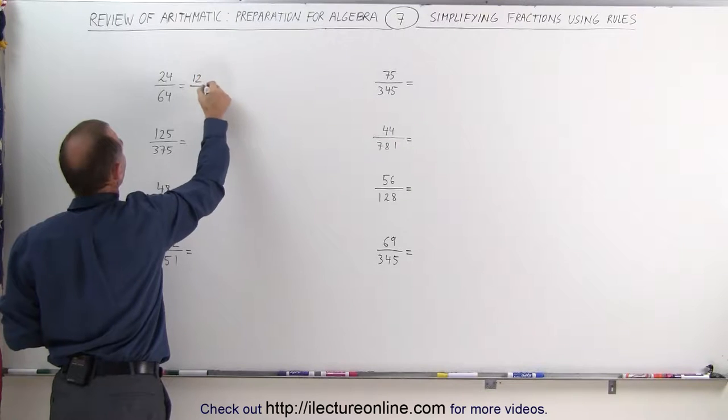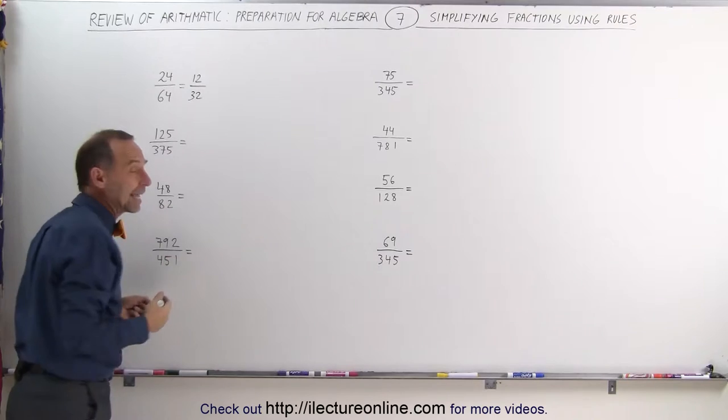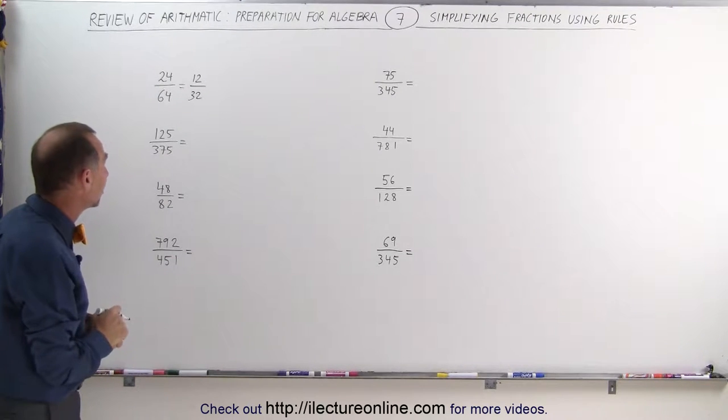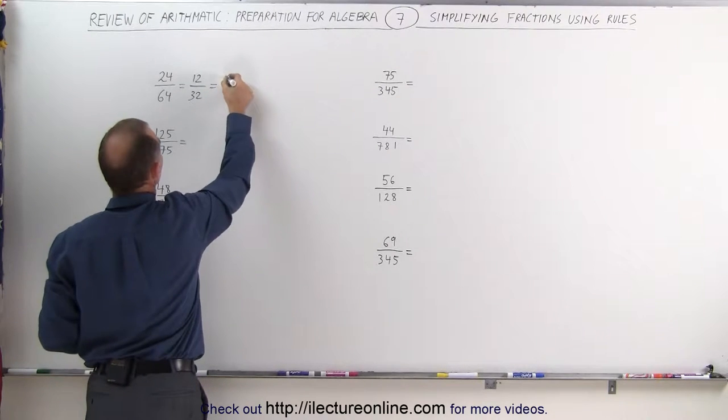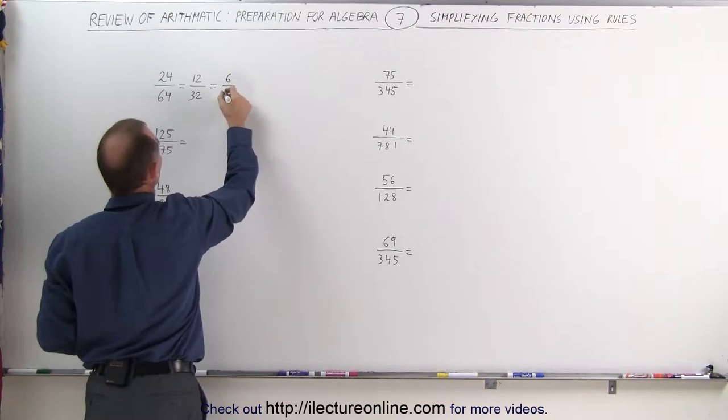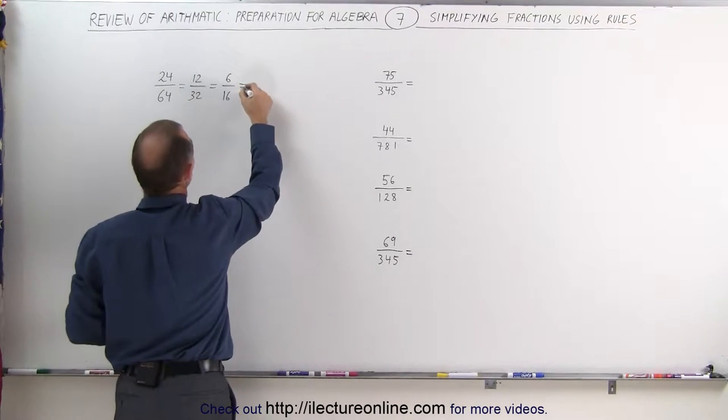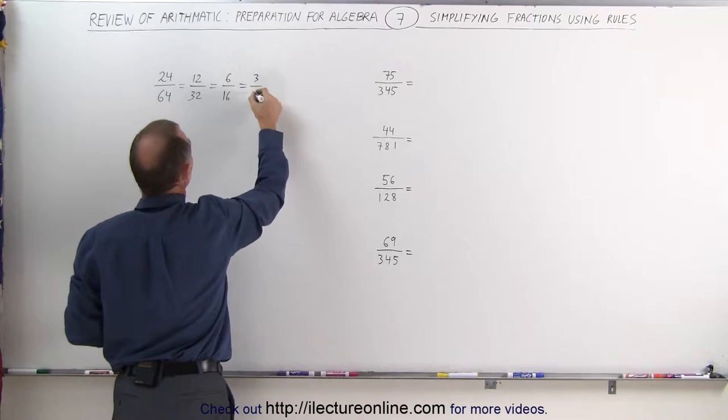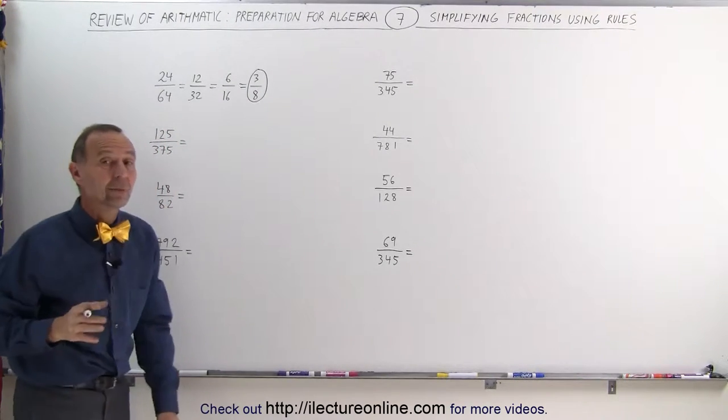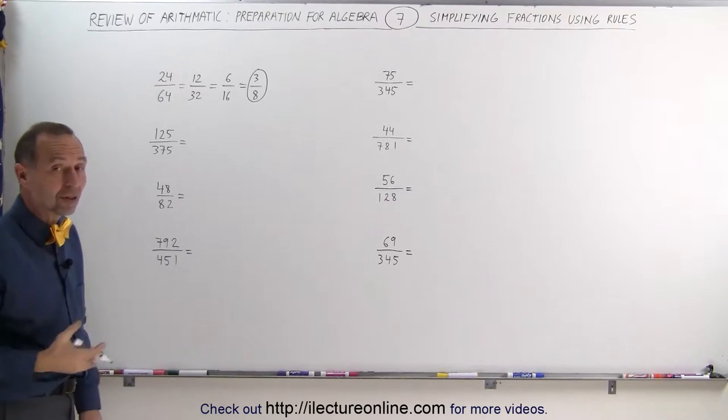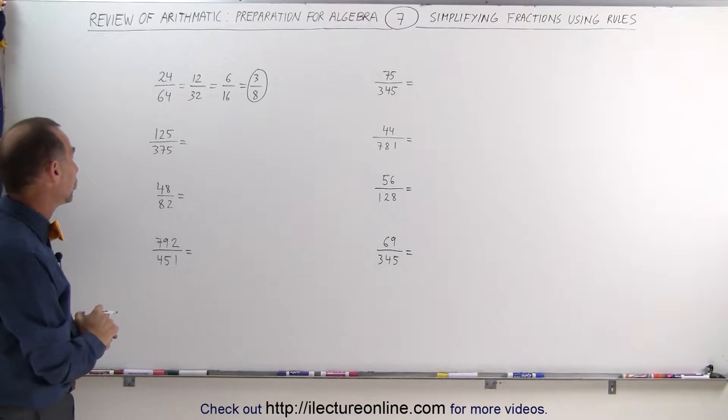24 divided by 2 is equal to 12, and 64 divided by 2 is equal to 32. All I have to do is just take half of each of the numbers. Since they're still even, I can still divide it by 2. 12 divided by 2 is 6, and 32 divided by 2 is 16. Again, they're still even. I can still divide it by 2. 6 divided by 2 is 3, 16 divided by 2 is equal to 8, and there's my final answer. All I did was simply apply the fact that each time I had a simpler fraction, they were still even, and I could still divide both the numerator and denominator by 2.